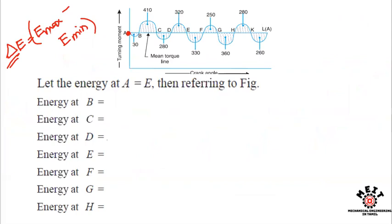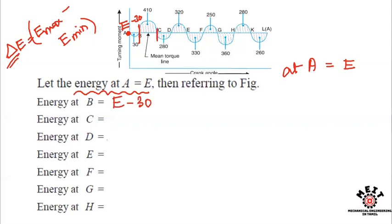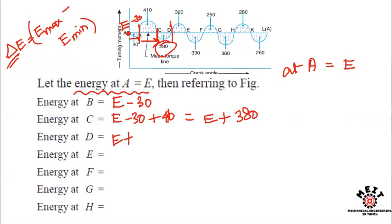Assuming the initial energy at point A is E. At point B, the energy is E minus 30. At point C, the energy is E minus 30 plus 410, giving E plus 380. Continuing this process, at point D the energy accumulates further to E plus 310.